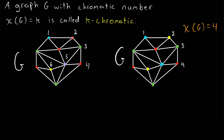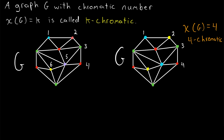Again, that's the smallest number of colors in any coloring of the graph. Since the chromatic number of G is four, we could also say that G is four chromatic. If we tried to color this graph with just three colors, then no matter how we went about doing it, some pair of adjacent vertices would have to have the same color. We need a minimum of four colors in order to color this graph.